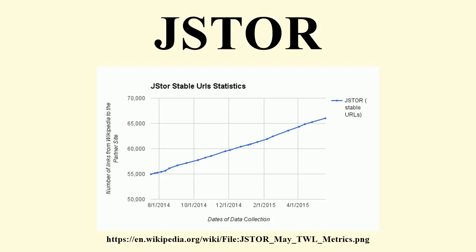JSTOR is licensed mainly to academic institutions, public libraries, research institutions, museums, and schools. More than 7,000 institutions in more than 150 countries have access. JSTOR has been running a pilot program of allowing subscribing institutions to provide access to their alumni in addition to current students and staff; the alumni access program officially launched in January 2013. Individual subscriptions are also available to certain journal titles through the journal publisher. Every year, JSTOR blocks 150 million attempts by non-subscribers to read articles. Inquiries have been made about the possibility of making JSTOR open access.